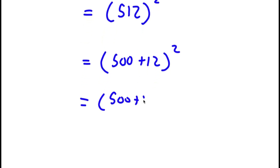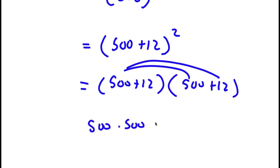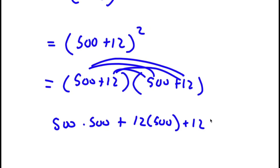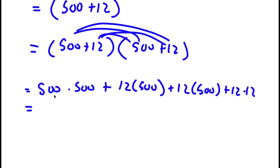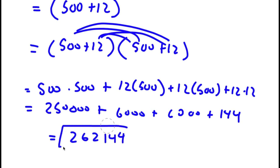I'll rewrite 512 as 500 plus 12, all to the power of 2. This is the same as 500 plus 12 times 500 plus 12. Distributing the 500 gives 500 times 500 plus 12 times 500, and distributing the 12 gives plus 12 times 500 plus 12 times 12. So 500 times 500 is 250,000, plus 6,000 plus 6,000 plus 144. So 6,000 plus 6,000 is 12,000, and 12,000 plus 250,000 is 262,000, plus 144. So this is my answer.